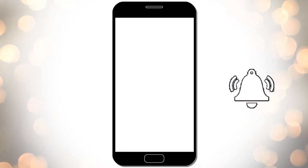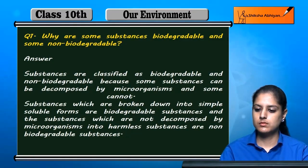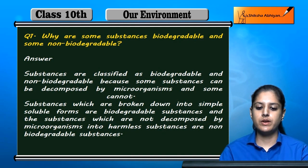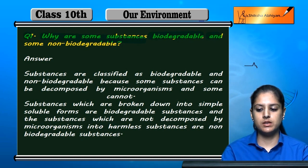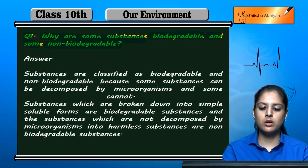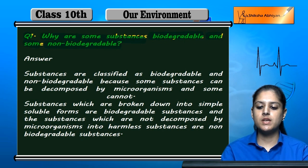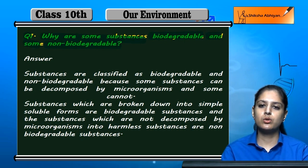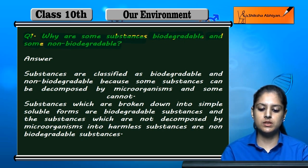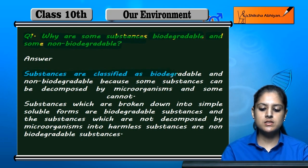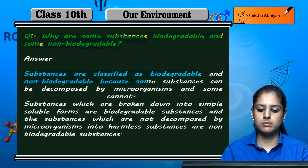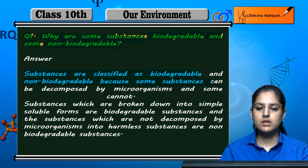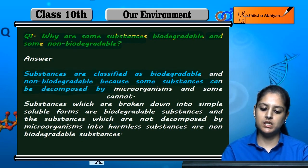Let us discuss a few questions. Question number one: why are some substances biodegradable and some non-biodegradable? Substances are classified as biodegradable and non-biodegradable because some substances can be decomposed by microorganisms and some cannot.